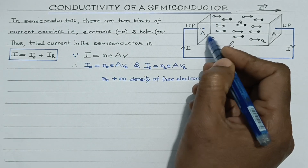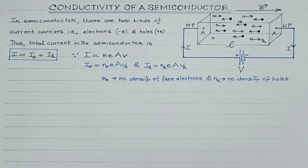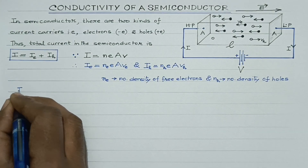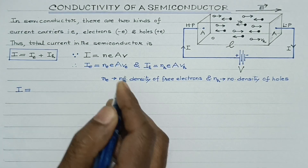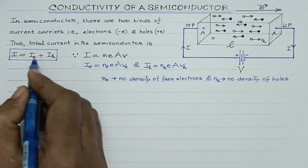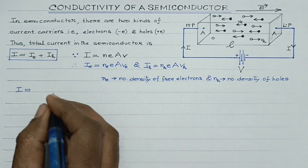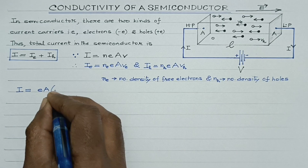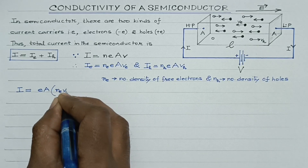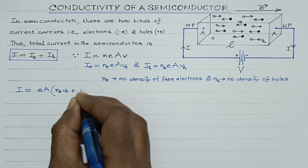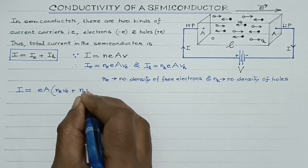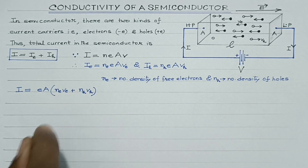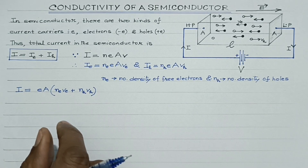N stands for the number density of electrons, A is the cross-sectional area, and V is the drift speed of the charge carriers. So, the total current through the semiconductor would be obtained by substituting the values of Ie and Ih. So we get I = e·A·(Ne·Ve + Nh·Vh). So this is the expression for the current flowing through the semiconducting crystal.